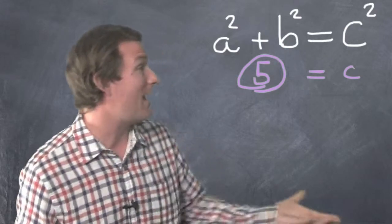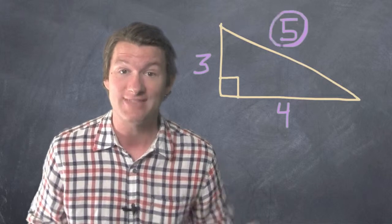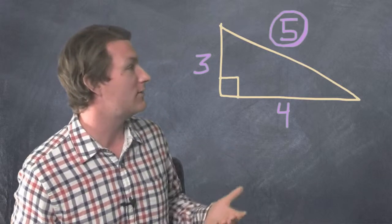So we found the third side. We found the hypotenuse. If the two legs are 3 and 4, the hypotenuse is 5. That's how we use the Pythagorean Theorem.